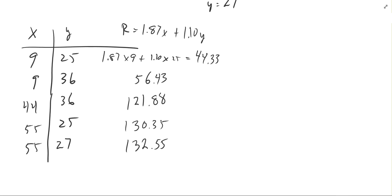All right, so I worked out the numbers. If you do the (9, 25) point you get $44.33. If you do 9 times $1.87 plus 36 times $1.10 it works out to $56.43. 44 times $1.87 plus 36 times $1.10 is $121.88. 55 times $1.87 plus 25 times $1.10 is $130.35. And so that's going to be our maximum there, $132.55. That's the largest of those values.